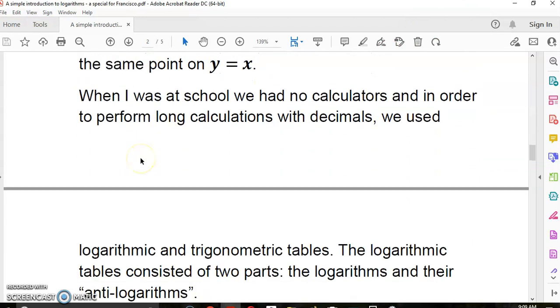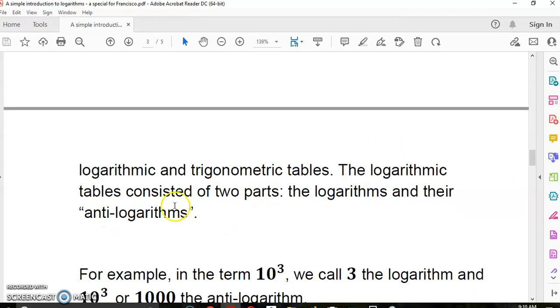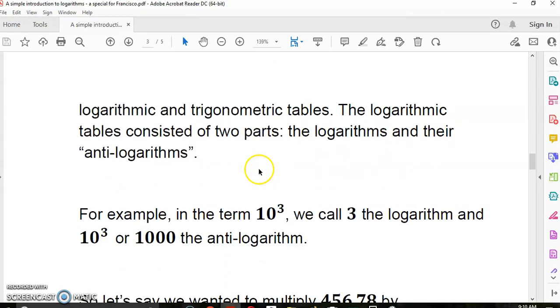To be symmetrical means to be equidistant from any same point on y equals x, which is the line of symmetry. When I was at school, we had no calculators, and in order to perform long calculations with decimals, we used logarithmic and trigonometric tables. In fact, before we used these tables, we had slide rules.